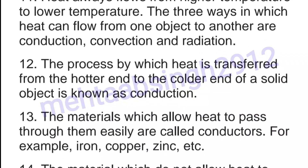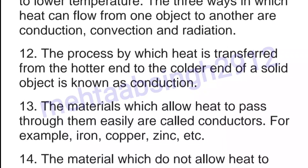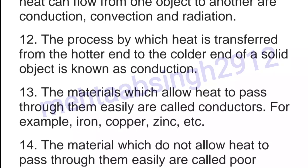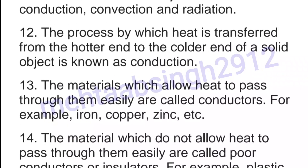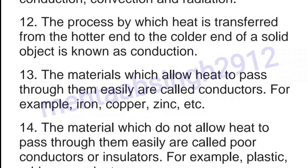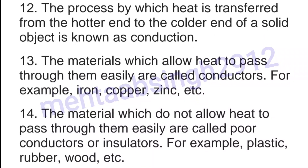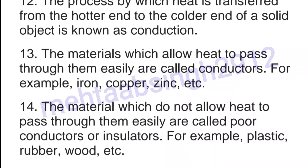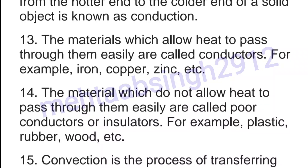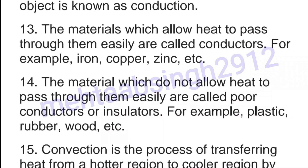Thirteenth, the materials which allow heat to pass through them easily are called conductors, e.g. iron, copper, zinc, etc. Fourteenth, the materials which do not allow heat to pass through them easily are called poor conductors or insulators, e.g. plastic, rubber, wood, etc.